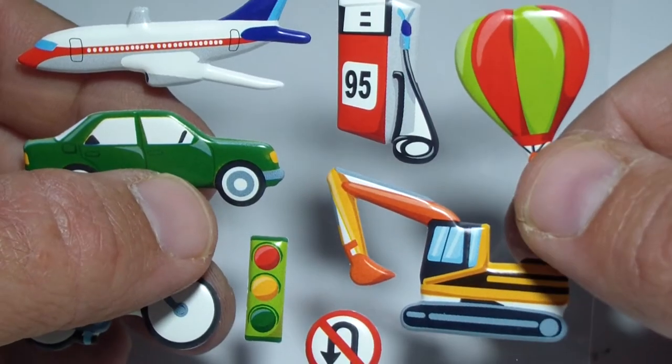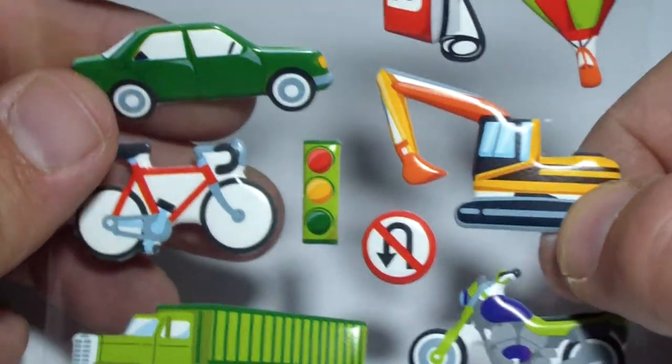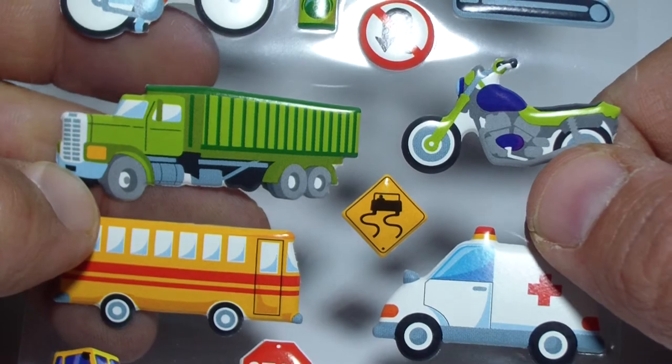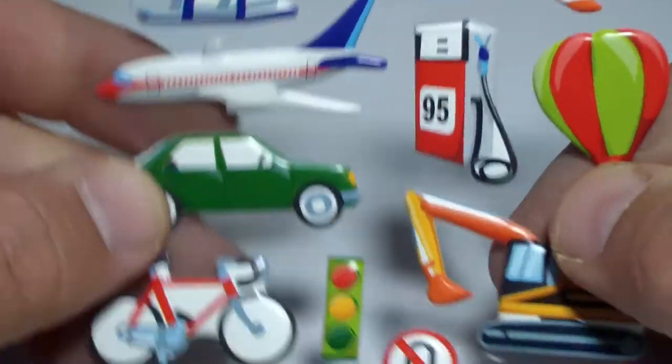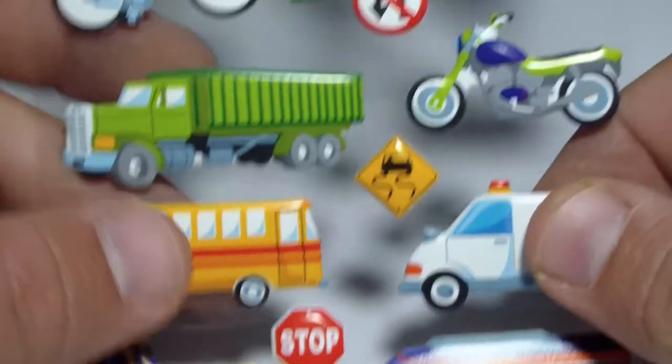We have a balloon, an excavator, a private car, a bicycle, a motorbike, a hot air balloon, another bicycle, and another motorbike.